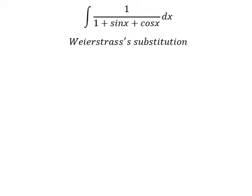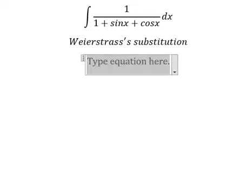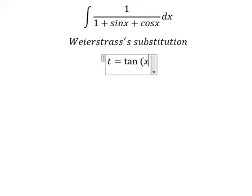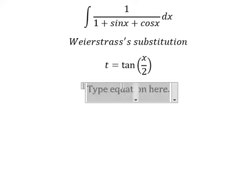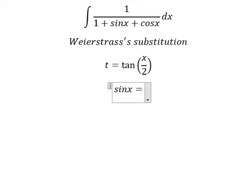So I will put t equal to tan of x over 2. So sin x we can change into 2t over 1 plus t squared.